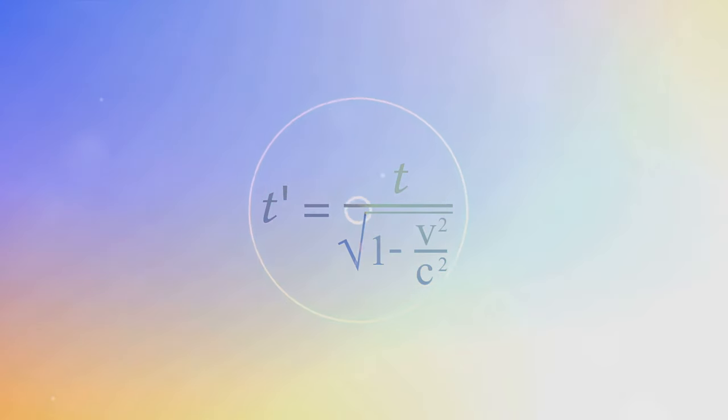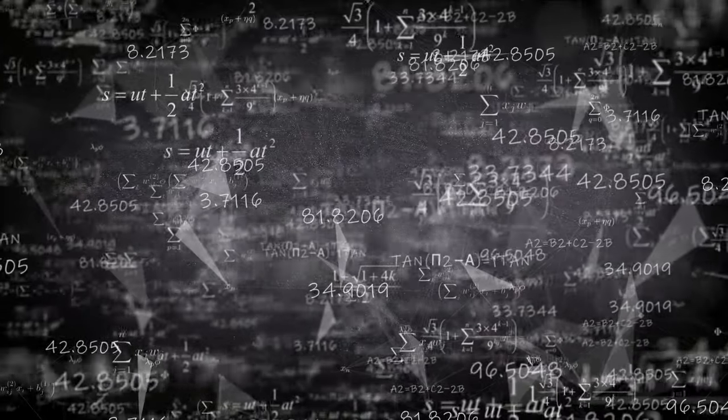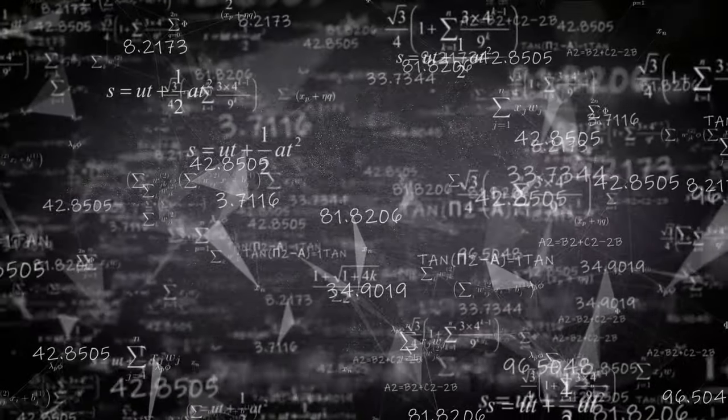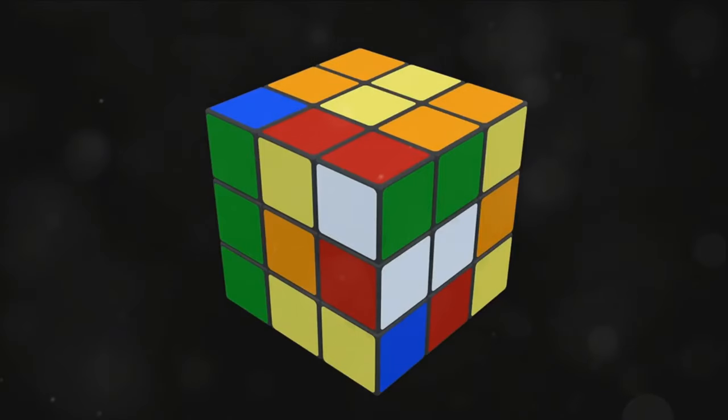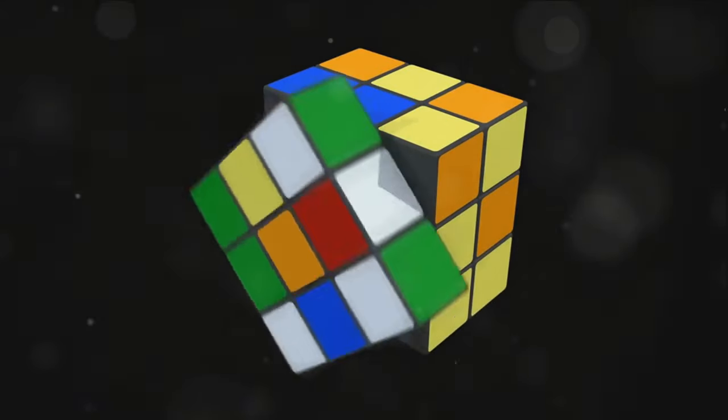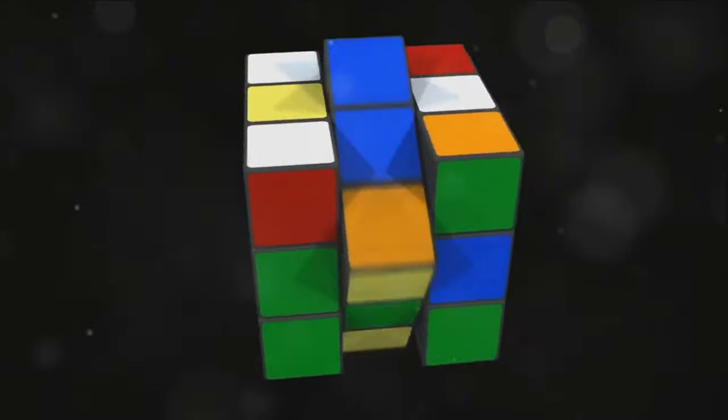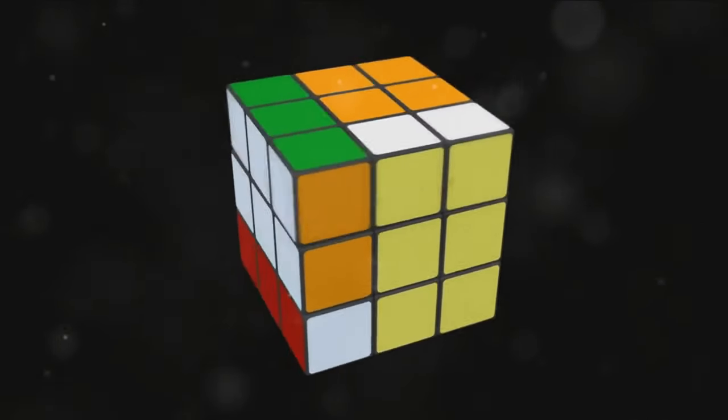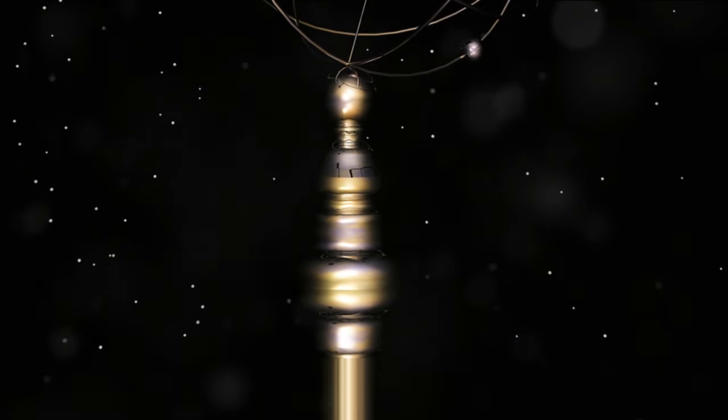And when we say difficult, we mean mathematically impossible to solve exactly. The problem lies in the equations themselves. The gravitational forces between three bodies result in a set of differential equations that, as it turns out, are non-linear. Now, linear equations are ones we can solve easily, like a jigsaw puzzle where every piece fits neatly together. But non-linear equations, like the ones we get in the three-body problem, are more like a Rubik's cube that's constantly changing colors. Every move affects the whole, and you can't solve one part without considering all the others. Even after more than three centuries since Newton, despite the leaps and bounds made in mathematics and computing, an exact solution to the three-body problem remains elusive.